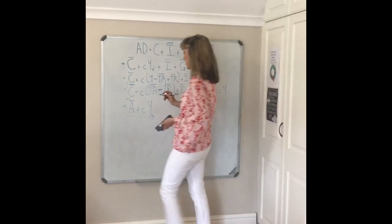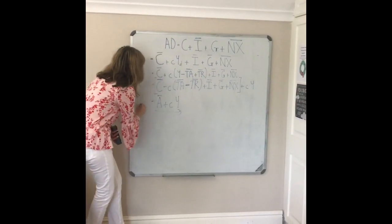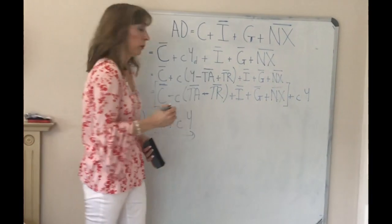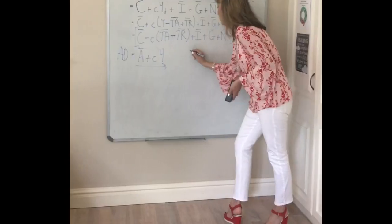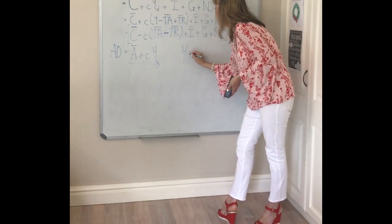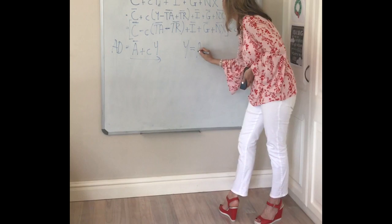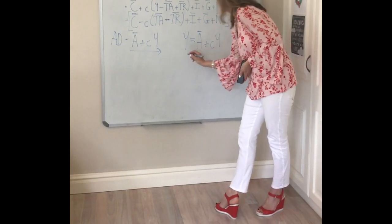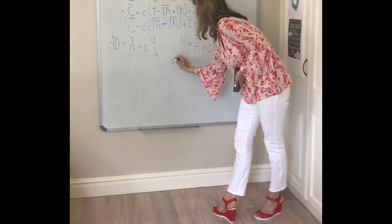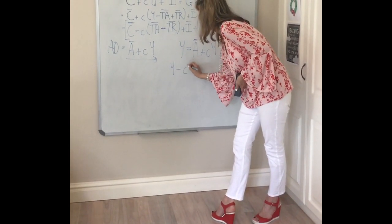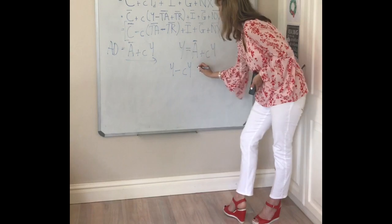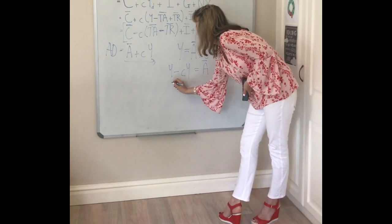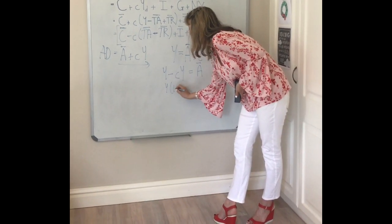This is an expression for aggregate demand, and we know that in equilibrium aggregate demand equals income. So we can set income equal to total autonomous spending plus little c·Y. Rearranging, Y minus c·Y equals A-bar, or Y times (1 minus c) equals autonomous spending.